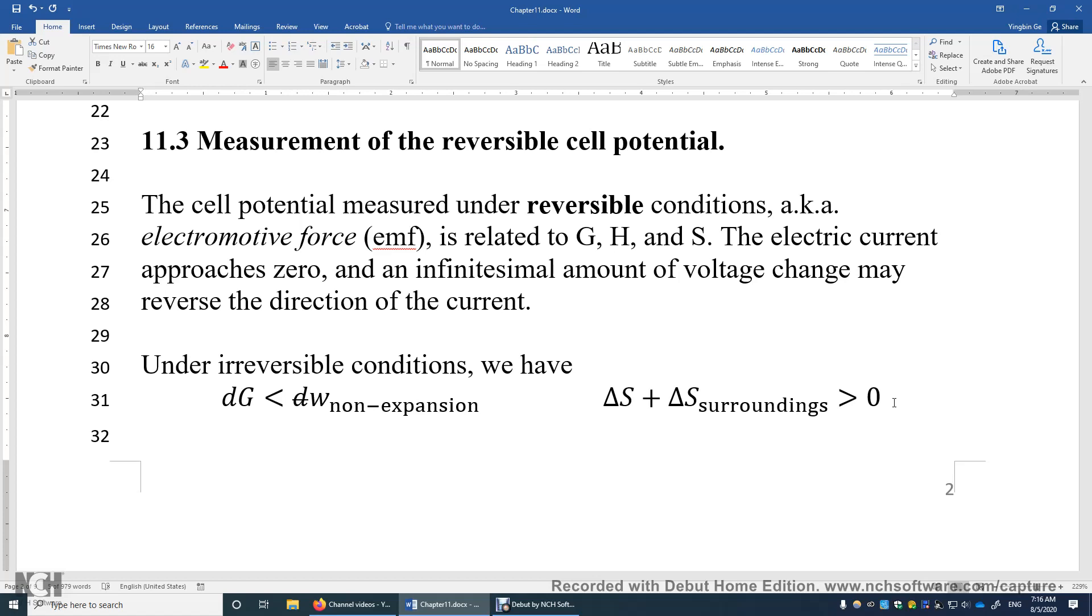Similarly, in this case, we need to make sure the overall measurable voltage is minimal. An infinitesimal amount of voltage change in the opposite direction can reverse the direction of the electric current. Of course, this electric current should be approaching zero as well.